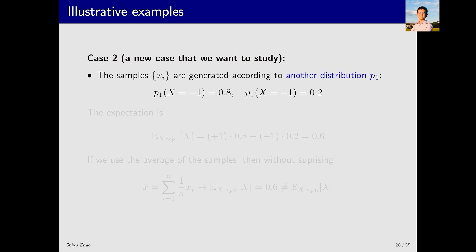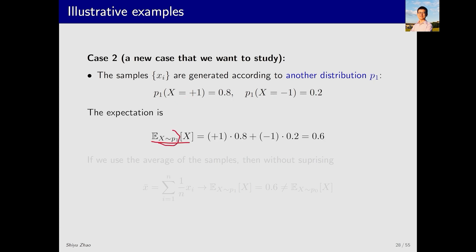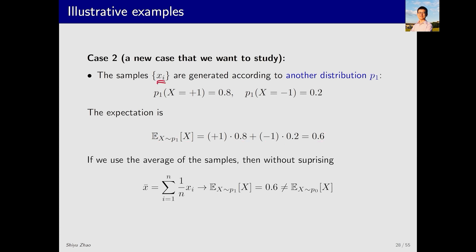Now let's consider the second case: we have some samples but these samples are not generated according to the p0 distribution. Instead they are generated according to a different distribution p1. For example, suppose p1 has a probability of 0.8 for x equals positive 1 and 0.2 for x equals negative 1. Since x follows p1, the expected value is 0.8 minus 0.2 equals 0.6. Since the samples are generated according to p1, the average x-bar will tend towards 0.6, which is different from the expectation under p0, which is 0.